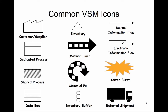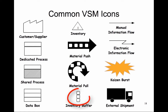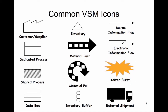Here are some common VSM icons: the customer/supplier icon; dedicated process icon; shared process; a data box to capture key metrics; inventory stored between processes; material push — pushing material or supply to the next process; material pull — pulling material or supply based on downstream demand; inventory buffer or safety stock, which helps protect against sudden demand fluctuations; manual information flow; electronic information flow; a Kaizen burst, which highlights a potential area of improvement; and external shipment, representing any transport mode.